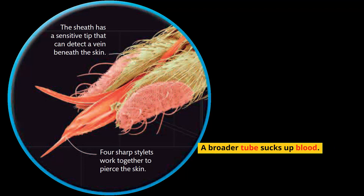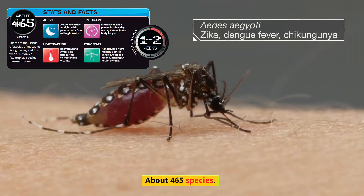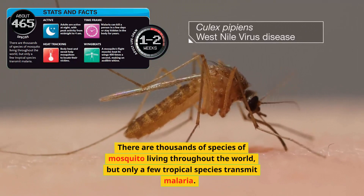There are about 465 species — thousands of species of mosquito living throughout the world — but only a few tropical species transmit malaria.